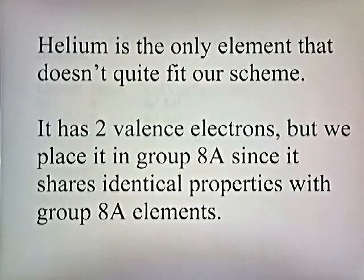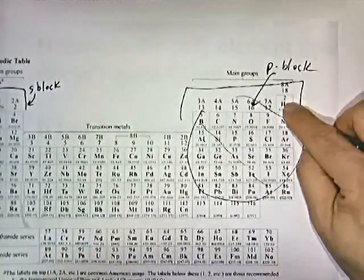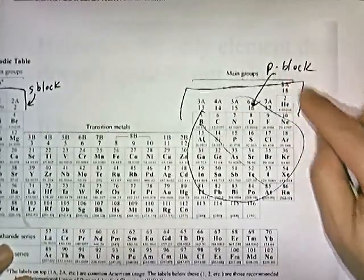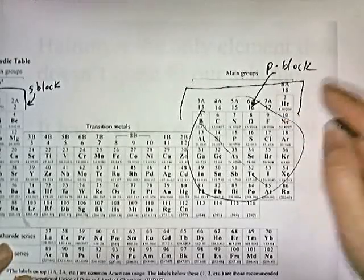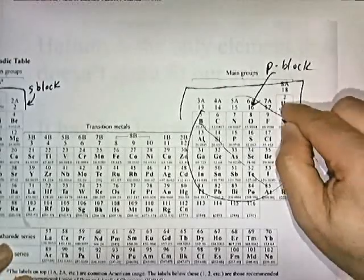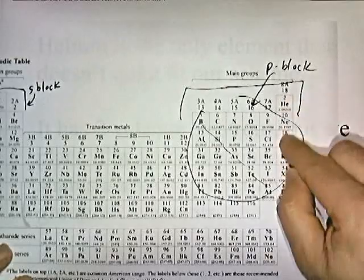Helium is the only element that doesn't quite fit our scheme. It has 2 valence electrons, but we place it in group 8A since it shares identical properties with group 8A elements such as neon, argon, krypton, xenon, and radon. So the periodic chart is not perfect.